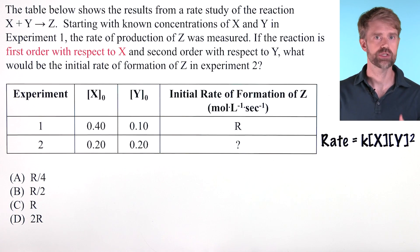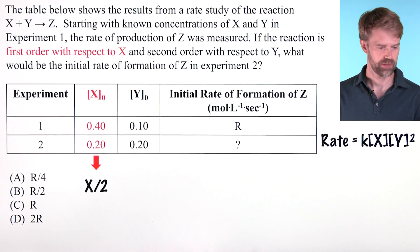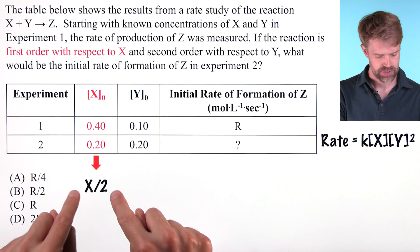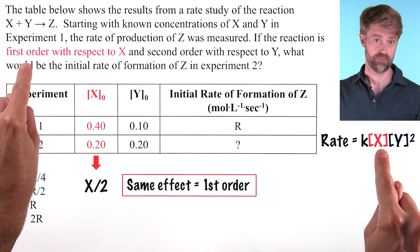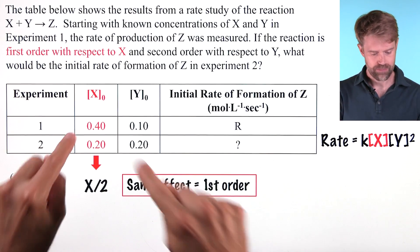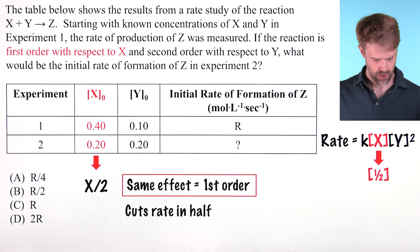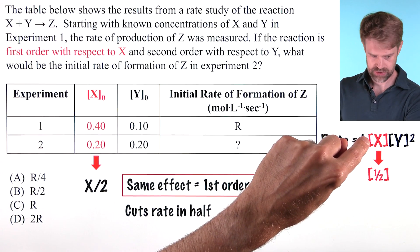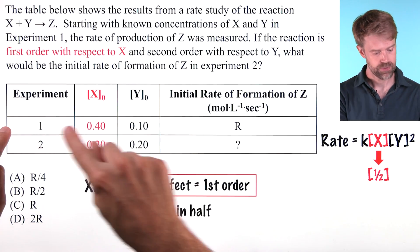Now we're going to look at the changes in concentration between experiment 1 and experiment 2 and see how that will affect the rate. X goes from 0.4 to 0.2, so the concentration of X is cut in half. Now, X is first order. And that means that whatever change we make to the concentration will trigger the exact same change to the rate. So if we cut the concentration in half, we cut the rate in half. So we can say that changes in X will contribute a one-half reduction in rate compared to experiment 1.